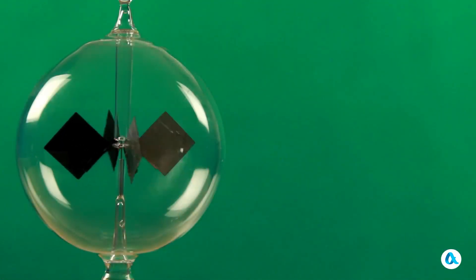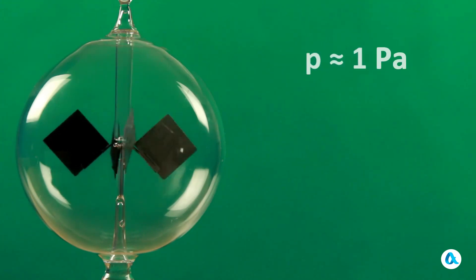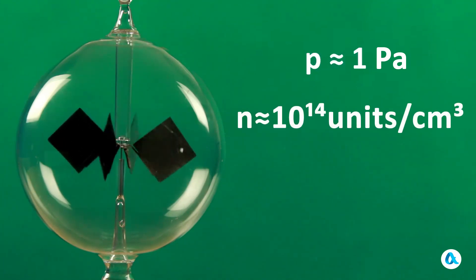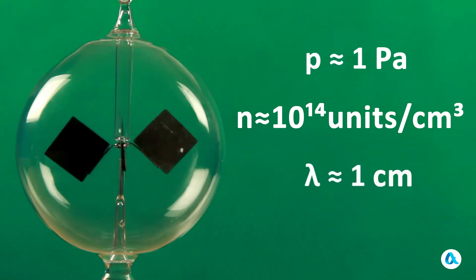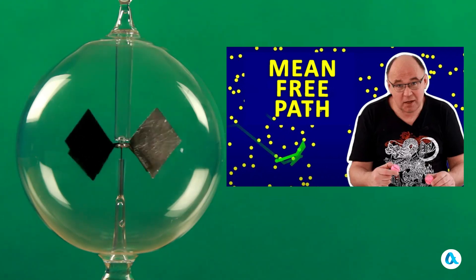But the radiometer with a vein is not at all like this model. It has no holes, but the air has been evacuated from the sphere, though not completely, to a pressure of approximately one pascal. At such a residual pressure, the concentration of molecules is approximately about 10 to the 14th molecules per cubic centimeter. And their mean free path is about one centimeter. By the way, we have a video on this topic and we recommend you watch it.